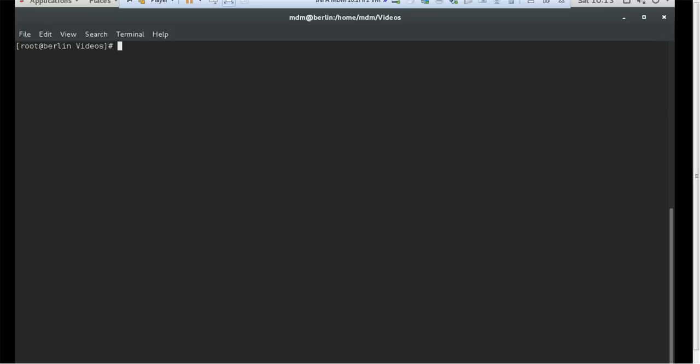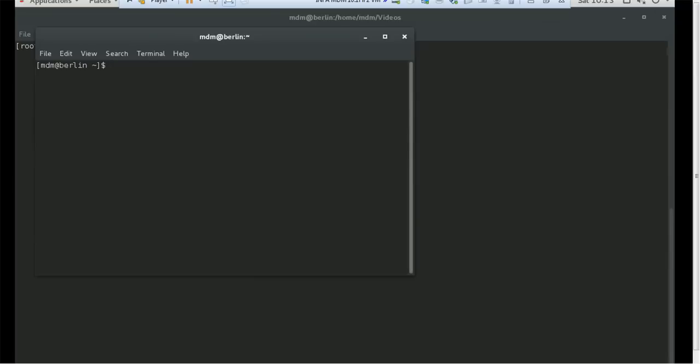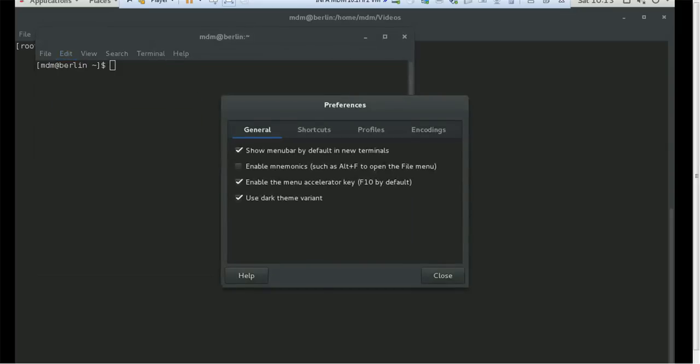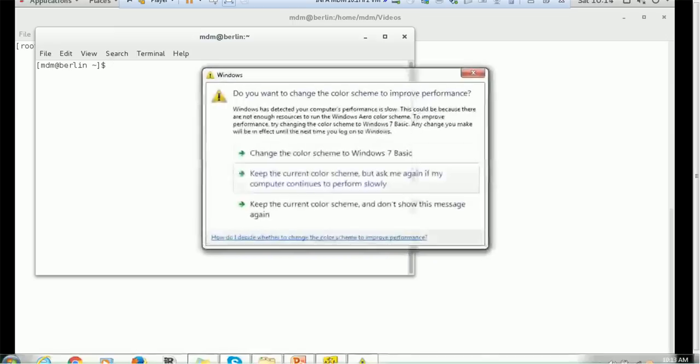So you want to know what is this black screen - it is called a terminal. Once you login to your Unix system, it will open one terminal for us to work on. If you want to change the look and feel of this terminal, you can just go to edit, go to preference and you will see use dark theme variant. Just uncheck it and it will become a white screen. It's up to you if you want a black screen or white screen. Let's go with the default theme, that is white screen.